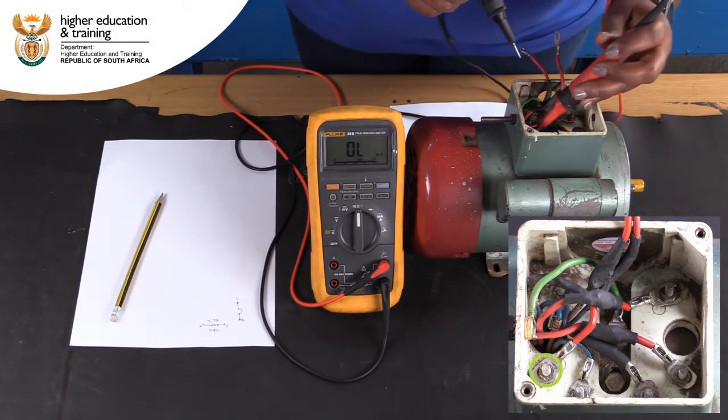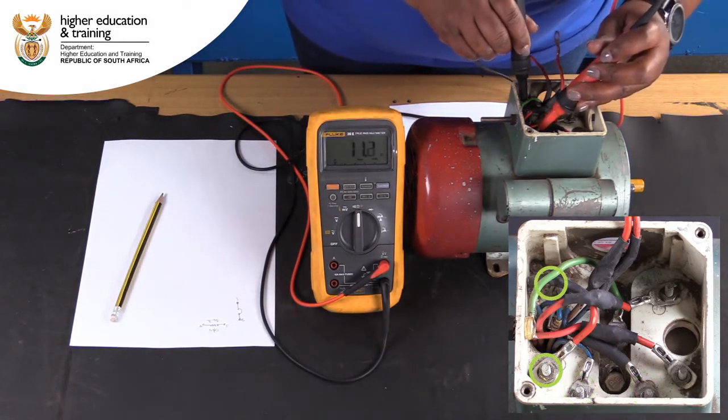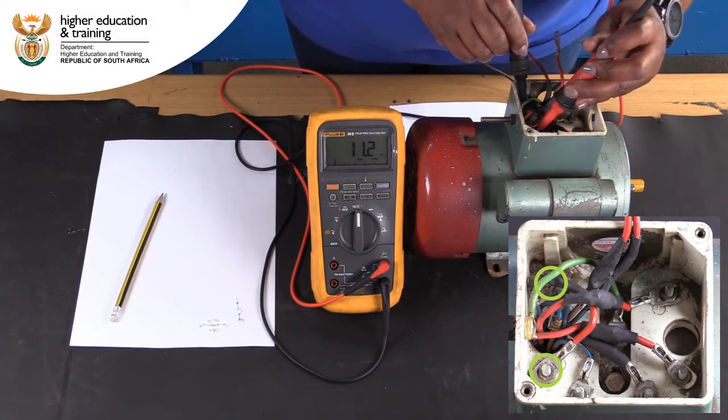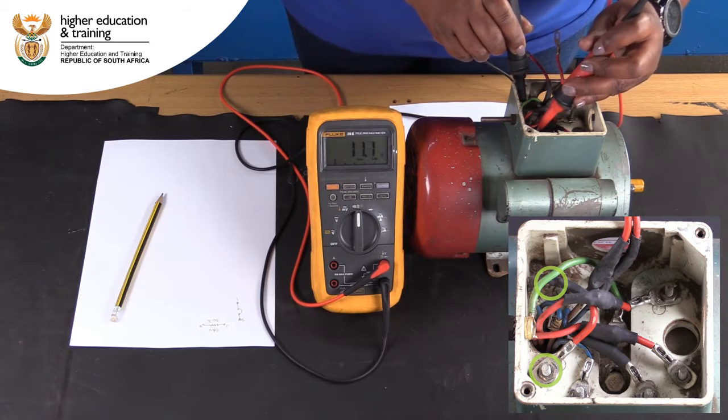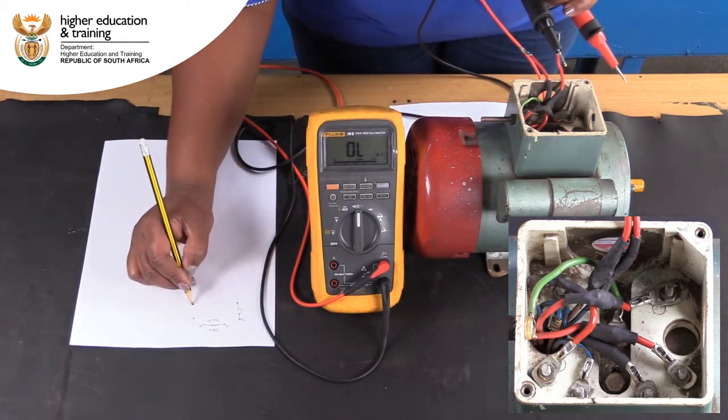Between posts 5 and 6, we get a lower reading of 11.1 ohms. Remember that the run winding will always have a lower resistance than the start winding. Therefore, this indicates the run winding.